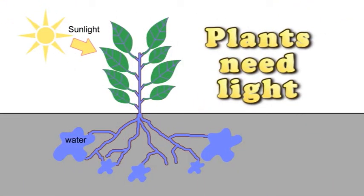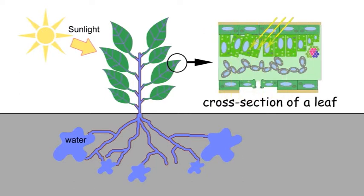Another thing plants need to grow is light. Just as the roots of a plant absorb water, the leaves of green plants absorb their energy in sunlight.